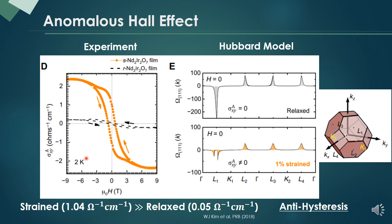We also measure the anomalous Hall conductivity in terms of the field. And here again, the black line is the relaxed film and the orange line is the strained film. Even at zero field, the strained film shows a 20 times larger Hall conductivity than the relaxed film.